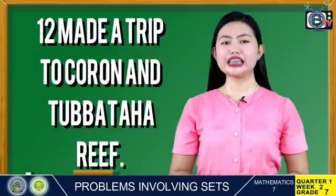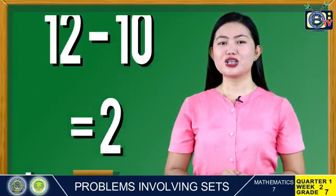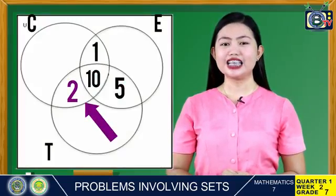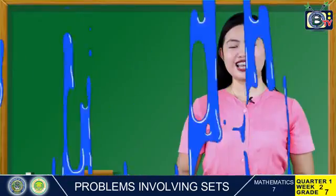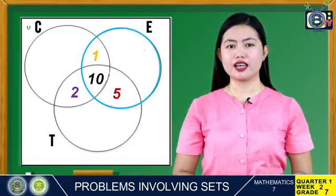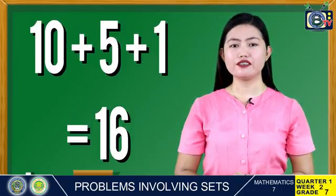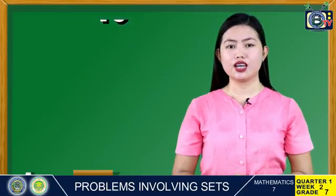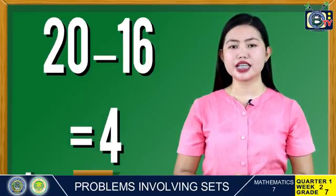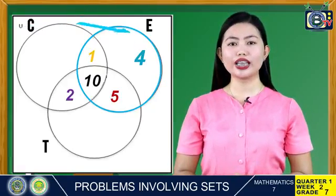For El Nido: 20 visited El Nido. Add all the given elements in set E: 10 plus 5 plus 6 plus 1 equals 16 (wait — recalculating: 10 plus 5 plus 1 equals elements placed, so: 10 plus 1 plus 5 equals 16 total placed). Subtract the total from 20: 20 minus 16 equals 4. Put 4 in set E only. This completes the 20 students.